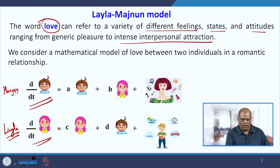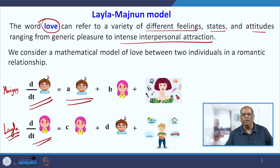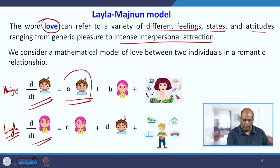On what does this love depend? The first factor is on his own feelings. Suppose a boy sees a girl and starts liking her — he is encouraged by his own feelings. That is taken care of by the first term, the rate being A.